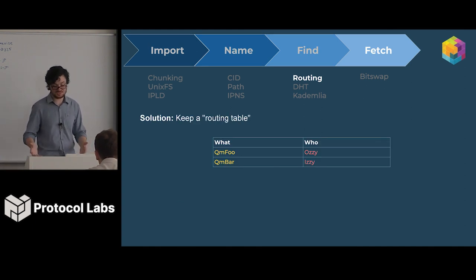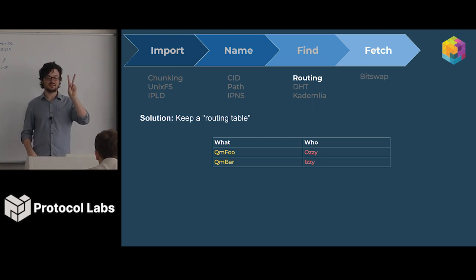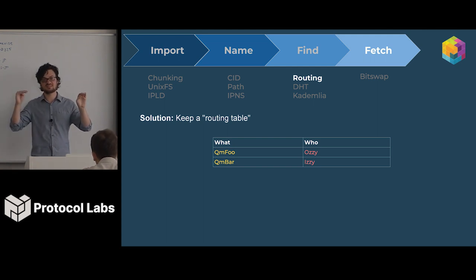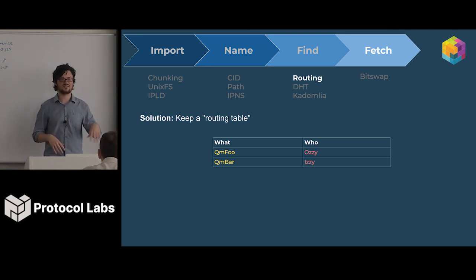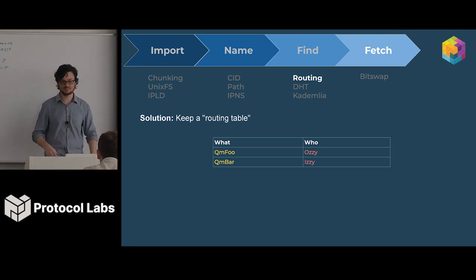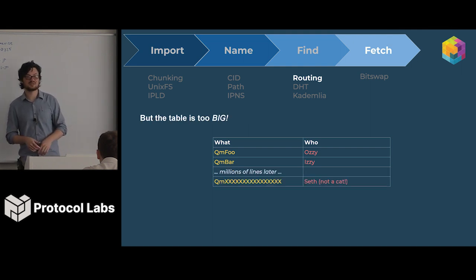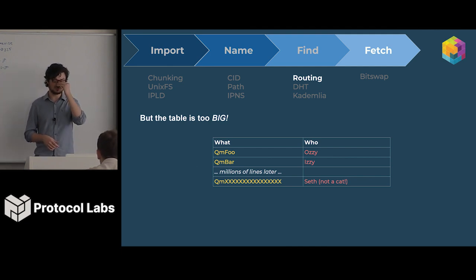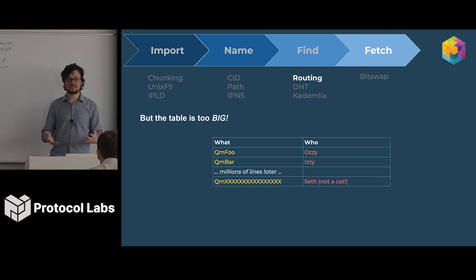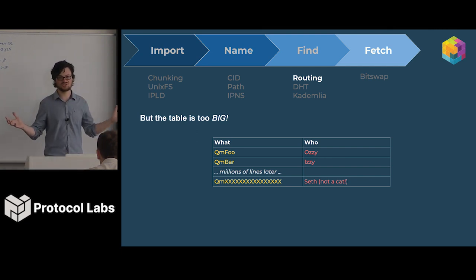How do we actually do this? We keep a routing table — we just have a massive table of 'this peer has this thing, this thing is held by this set of peers.' If I'm trying to find QMbar, I go to this routing table and say who has it? The problem is the routing table is really big. A single peer can't easily hold this routing table. So we have to figure out how to deal with this massive routing table and where to actually store it.